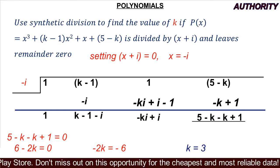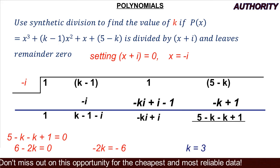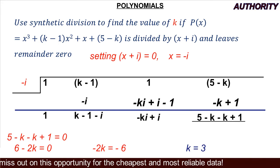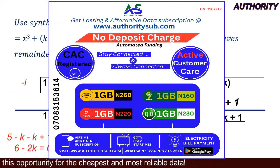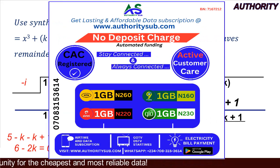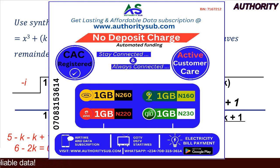We have solved it — using synthetic division, we discovered that k = 3. Thank you very much for watching. If you are new to our YouTube channel, don't forget to subscribe, like, and share our videos. Stay blessed.